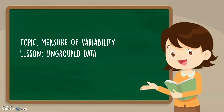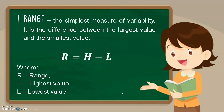Let's talk about the measure of variability for ungrouped data, starting with the range. For ungrouped data, we focus on individual scores without a frequency distribution table. When we say range, this is the simplest measure of variability — it is the difference between the largest value and the smallest value. The formula is R equals H minus L, which stands for highest minus lowest.